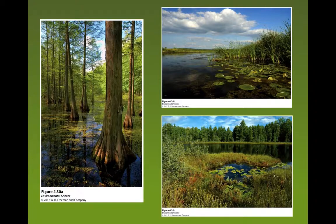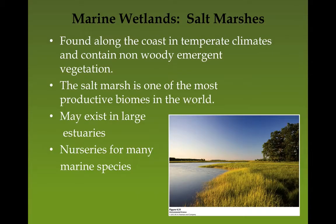Cypress knees are an example of wetland tree adaptation — roots come up above the water level allowing oxygen exchange. Marine wetlands are known as salt marshes, found in more temperate climates, containing non-woody emergent vegetation in salt water. Salt marshes are very productive and often exist in estuaries — the bays where a river meets the ocean. They serve as nurseries for many marine species, providing a very safe, protected environment for young marine organisms.